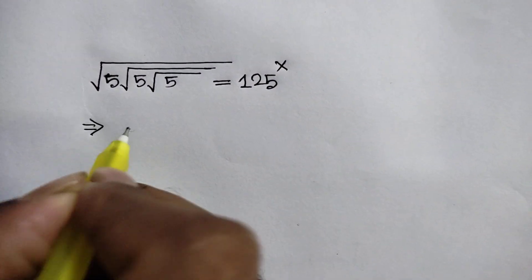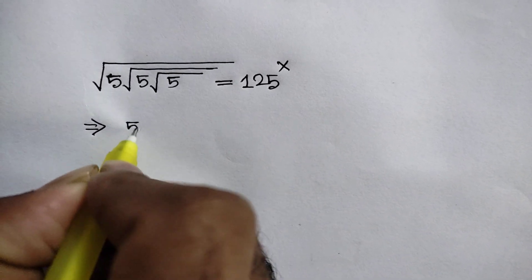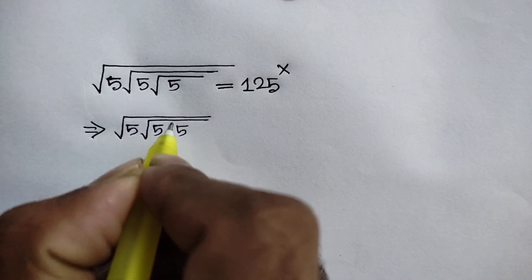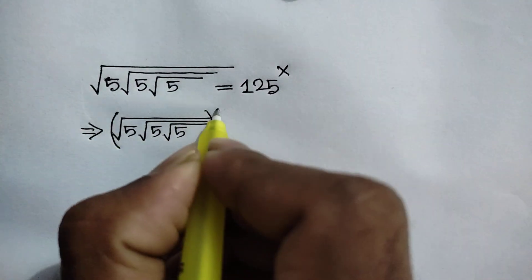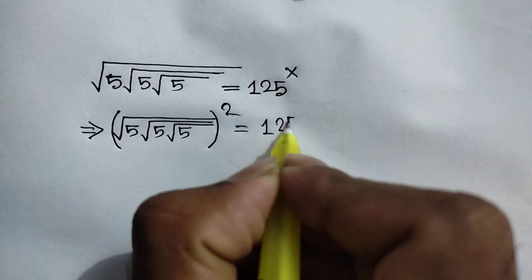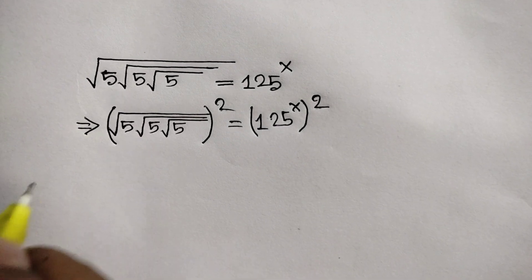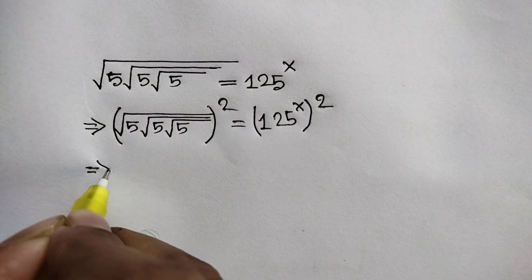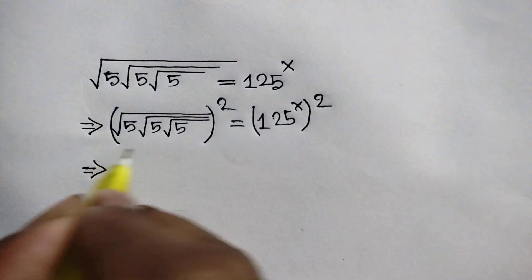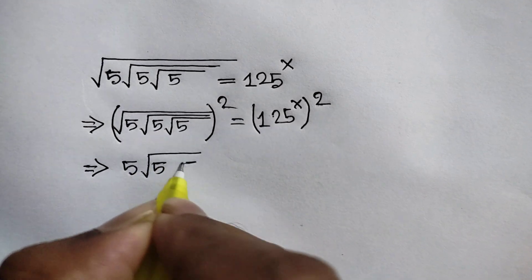For this situation, squaring both sides, we will write: square root of 5 times square root of 5 times square root of 5, whole squared, is equal to 125 to the power x, whole squared. This square root cancels out the square, so it will be remaining 5 times square root of 5 times square root of 5.